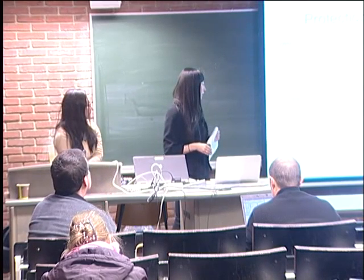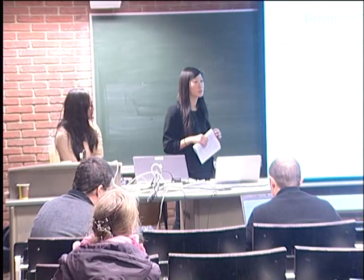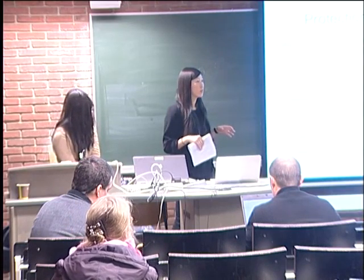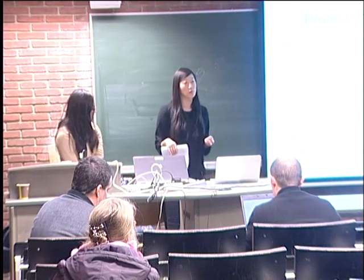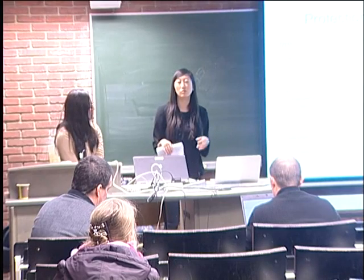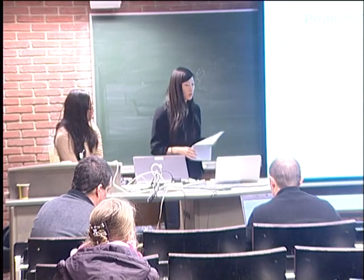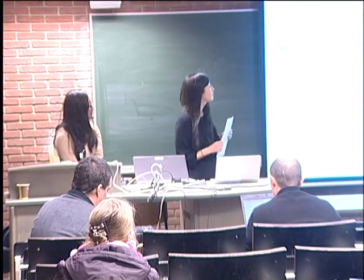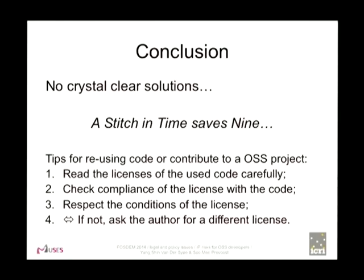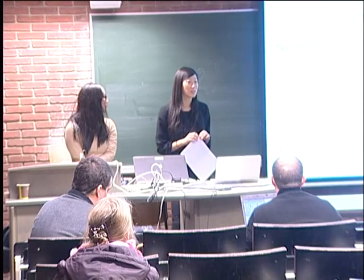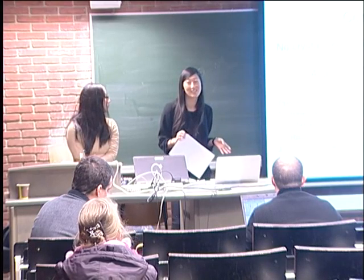Secondly, you can negotiate additional licenses, because if a previous person was the author of the code, they have the right to give another license with other obligations and limitations. Our main conclusions are that there are no clear solutions. As the saying goes, a stitch in time saves nine: read the licenses and try to comply as best as you can.